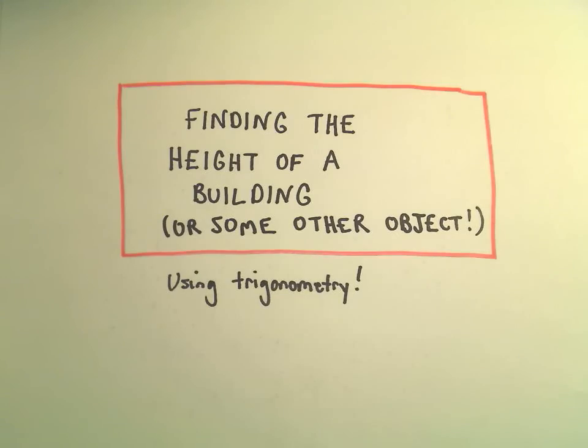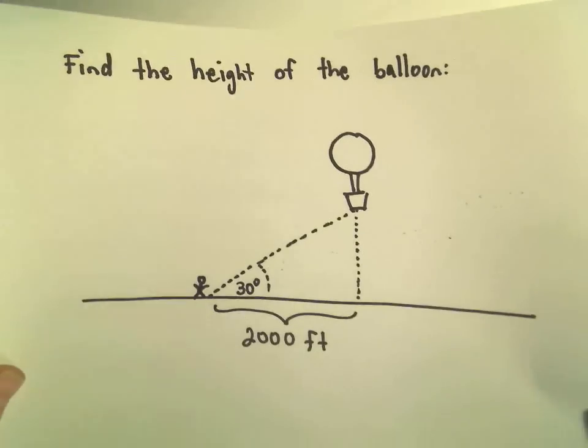All right, in this video we're going to do an example of finding the height of an object. We're simply going to use some basic trigonometry to help us do this.